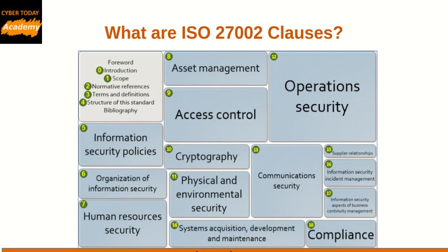What are the ISO 27002 clauses? Each clause contains a number of main security categories. The standard starts with 5 introductory clauses: 1. Introduction, 2. Scope, 3. Normative references, 4. Terms and definitions, 5. Structure of this standard. These are followed by 14 main clauses.